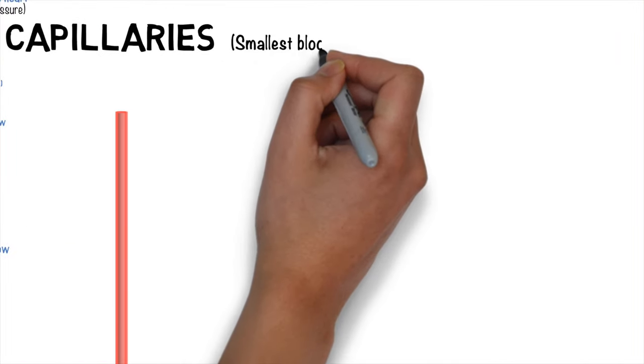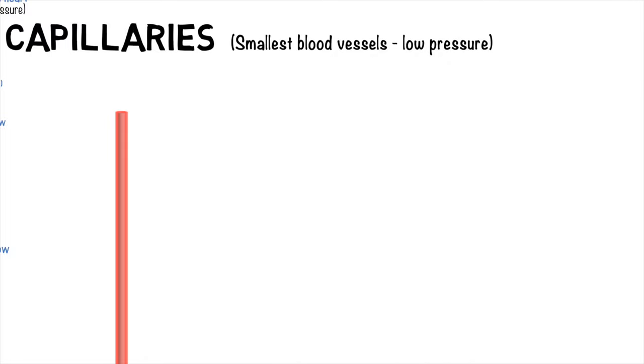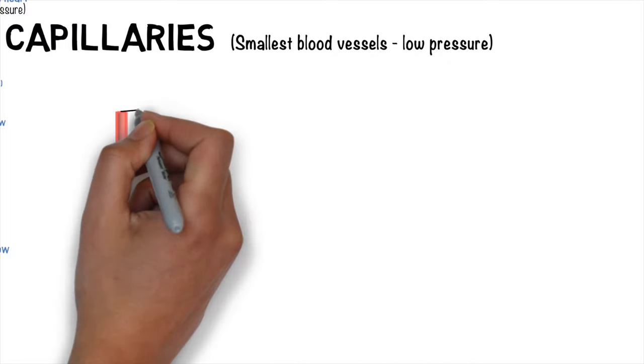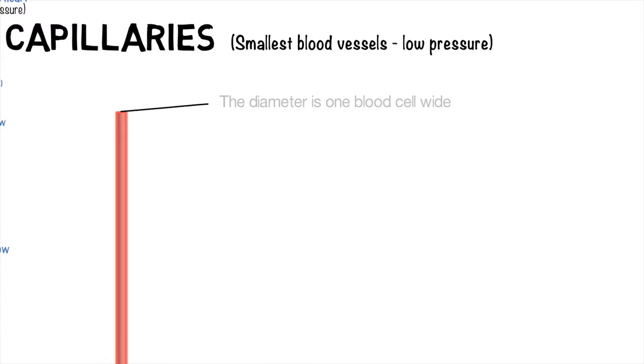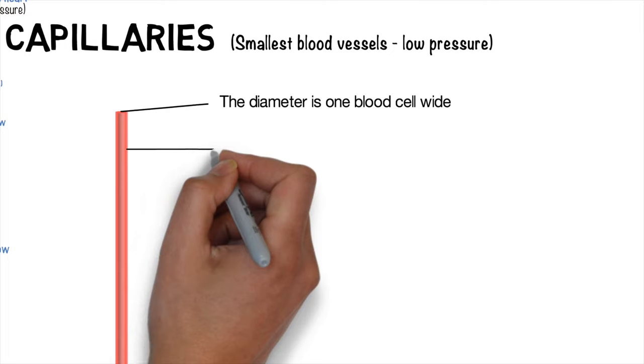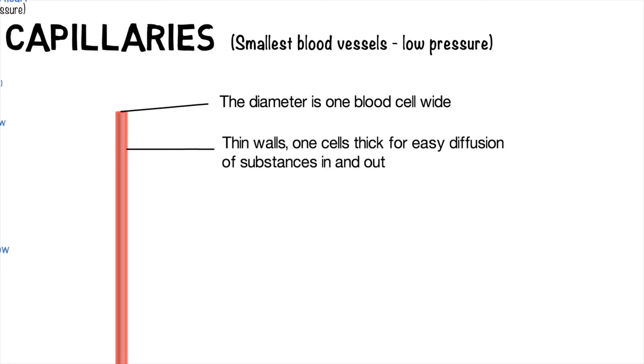Which then brings us onto capillaries. These are the smallest blood vessels, and they're at low pressure. There's a tiny lumen, which is only enough to allow one blood cell through at a time. So the red blood cells actually push against the walls of the inside of the capillaries. And those walls are also only one cell thick. And that's to allow oxygen and other things to diffuse through the wall really easily.